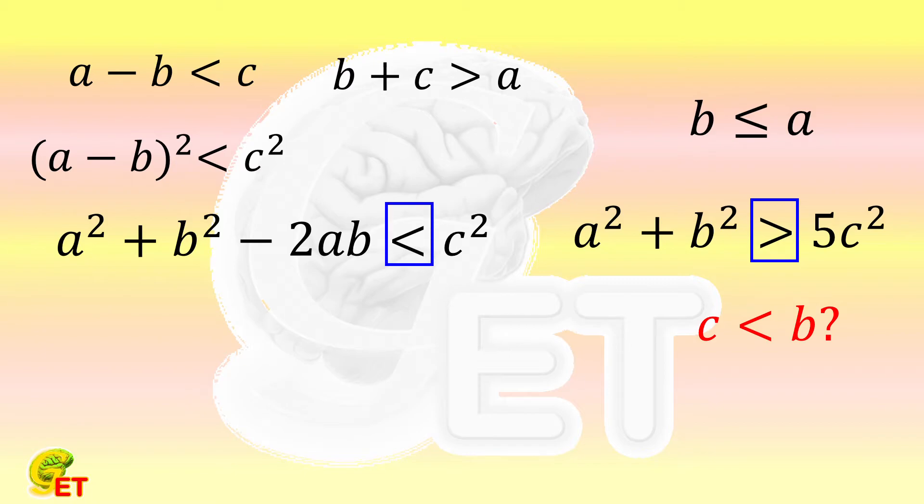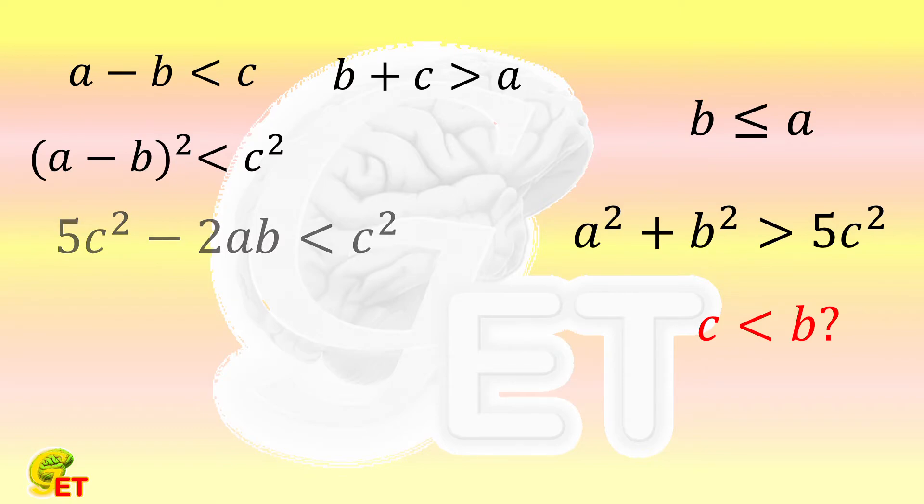So we replace a² + b² by 5c², and the direction of the inequality sign remains the same. We therefore have 4c² < 2ab.